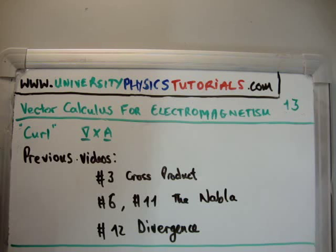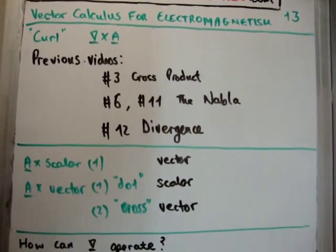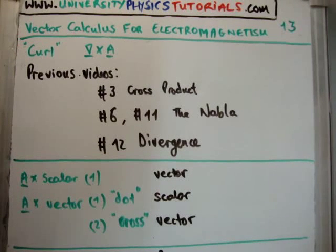I'm going to continue this in the same fashion as I've done in the last few videos. If we have a vector, let's say A, we can do three things with it. We can multiply it by a scalar and there's only one way we can do that.